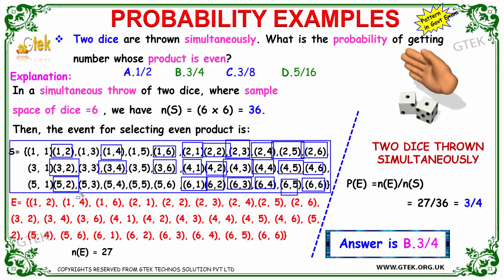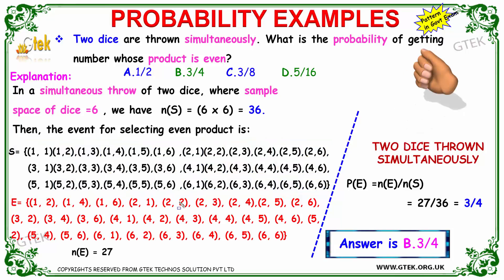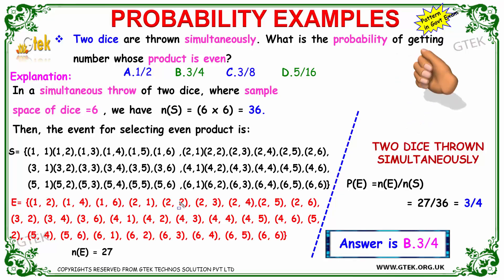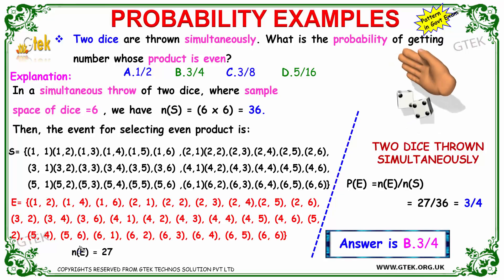Also 5×2 is 10, 5×4 is 20, 5×6 is 30 — these are all even products. The total number of favorable outcomes is 27 out of 36. So the probability is 27 divided by 36, which equals 3/4.